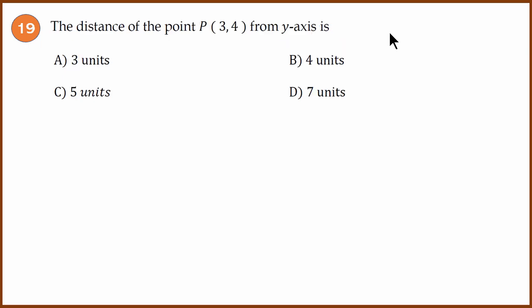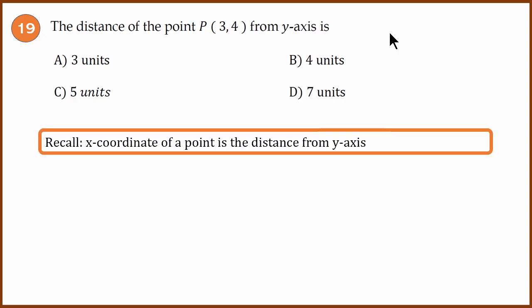Question 19: Coordinate geometry question. The distance of the point (3, 4) from the y-axis is? The distance from the y-axis is always the x-coordinate. The x-coordinate of a point is the distance from the y-axis. Here the x-coordinate is 3, so the answer is 3 units.